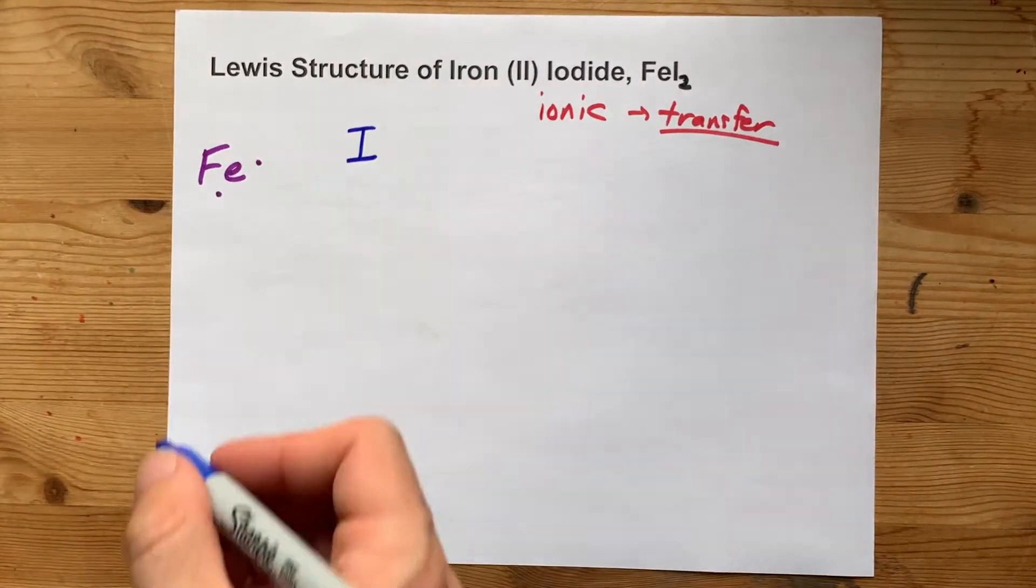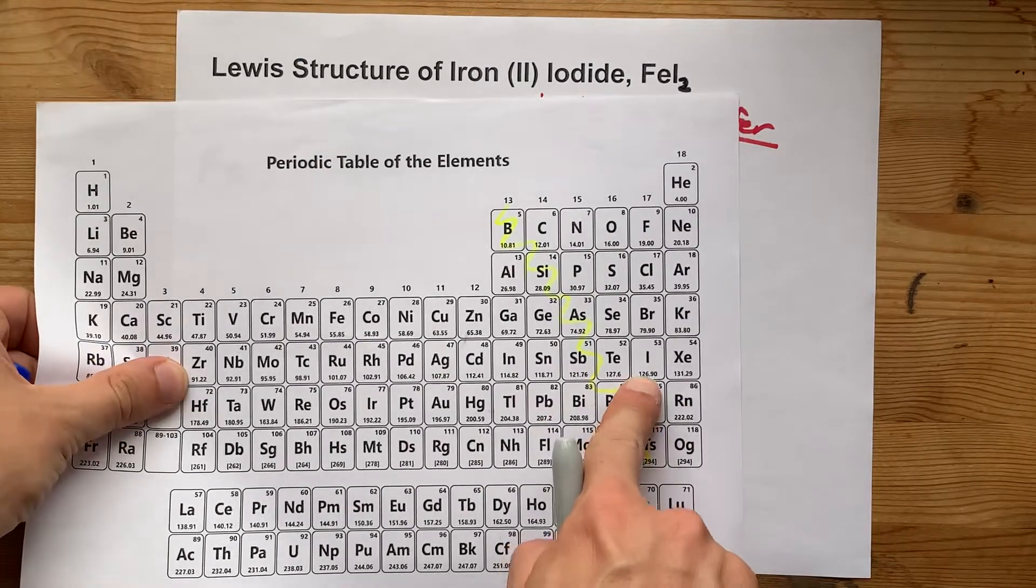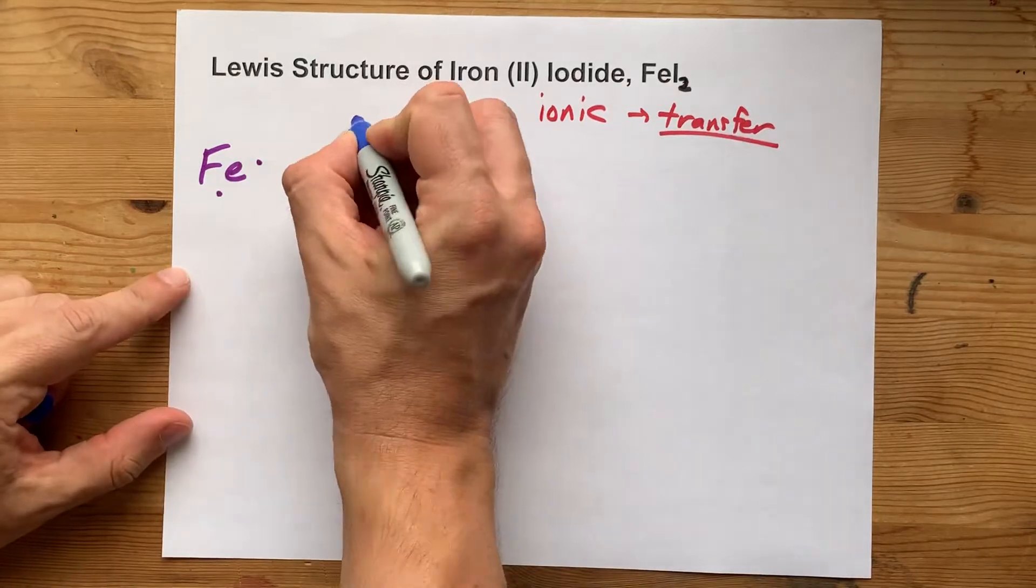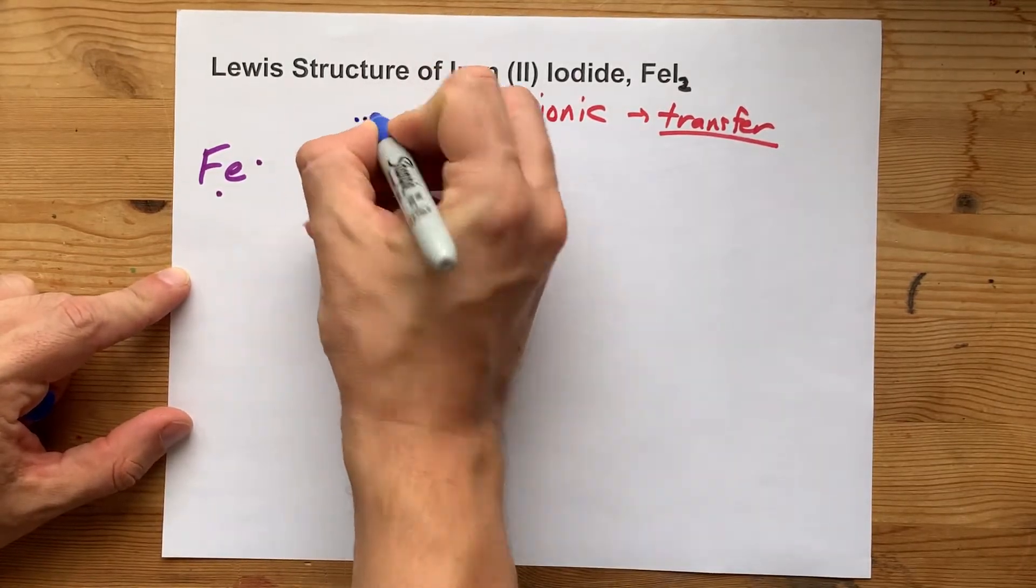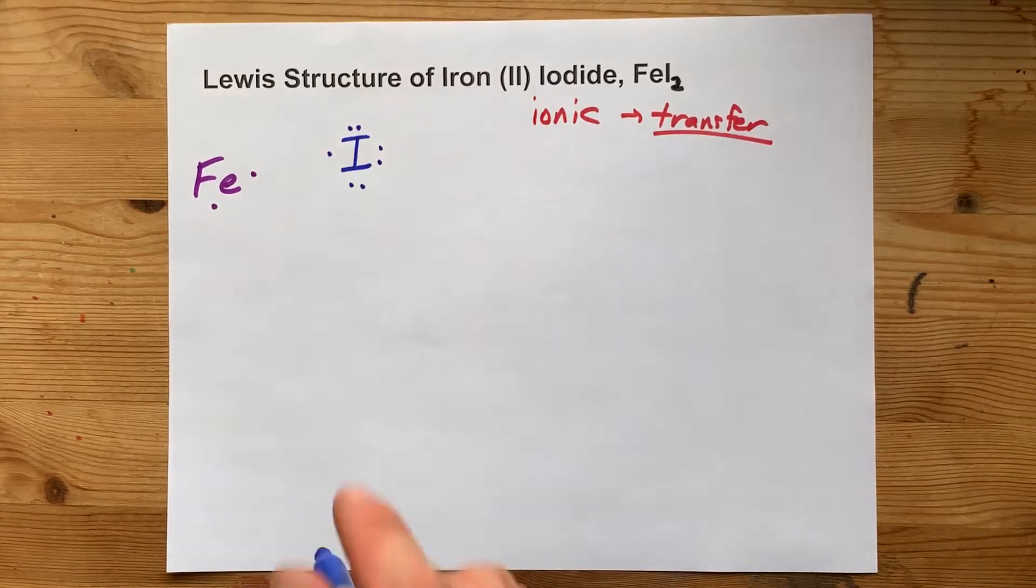Now, iodine, which is in group 17 of the periodic table, here's my proof. There's iodine, group 17, brings 7 valence electrons with it. So I'm going to draw 7 dots around iodine, 3 pairs and a single.